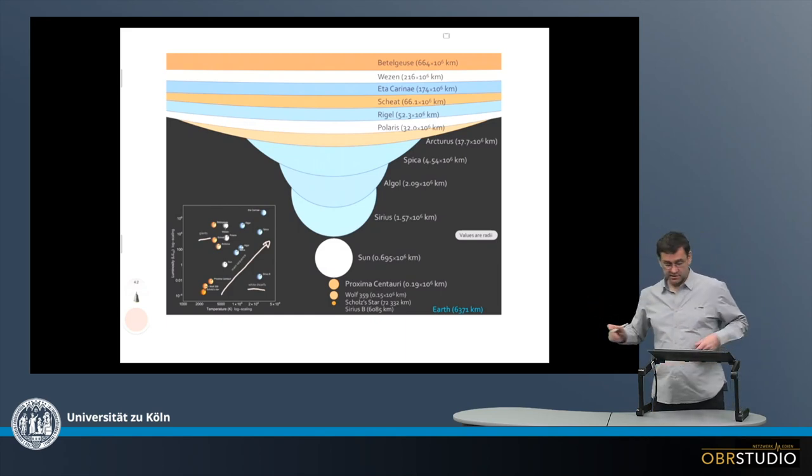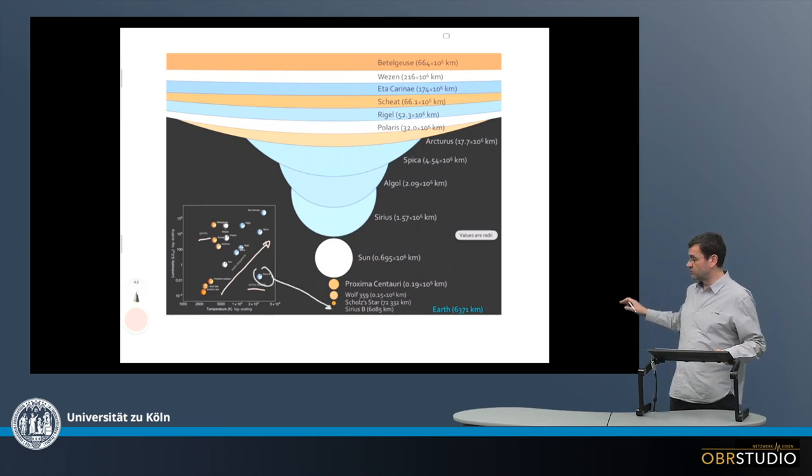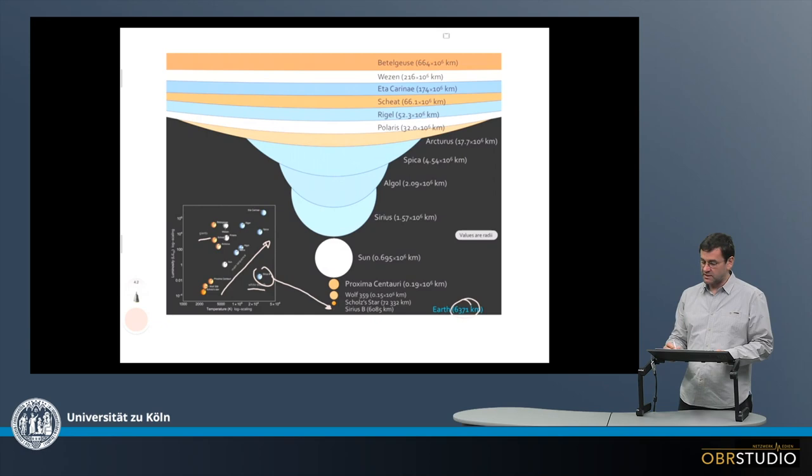The smallest star here is Sirius B. This is a white dwarf, and the radius is a little more than 6,000 kilometers. This immediately reminds us of Earth, which also has a radius of a little more than 6,000 kilometers, but Earth is even a little bigger than Sirius B.